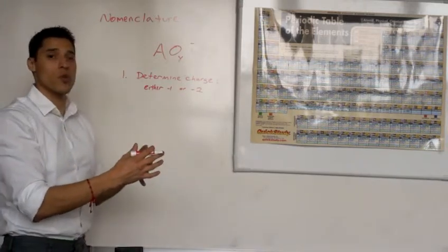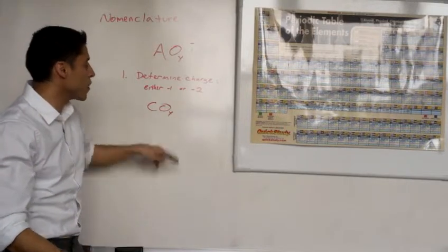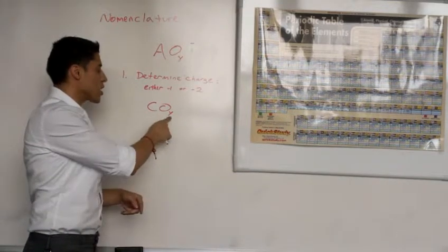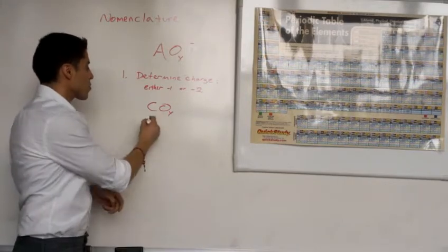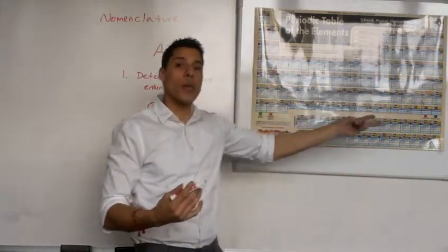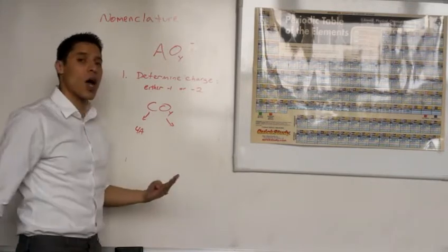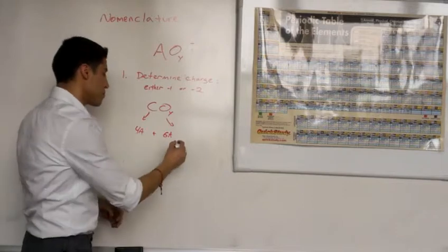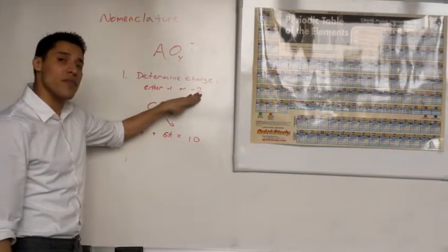We're going to determine the charge of carbonate. Carbonate is going to have a carbon bonded to a certain amount of oxygens — we'll determine the number of oxygens in the next step. Right now we're determining the charge. We look at the periodic table: carbon lands in the 4A group, and oxygen lands in the 6A group. To determine the charge, we add up these numbers. If the sum is an even number, you're going to have an even charge — so a negative 2.